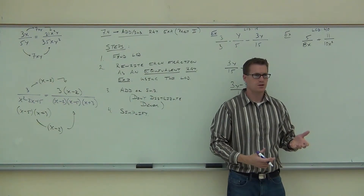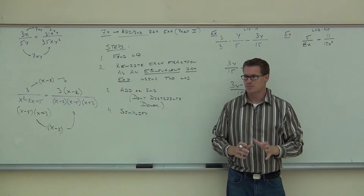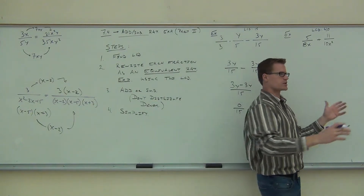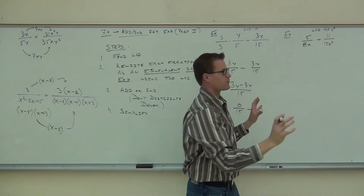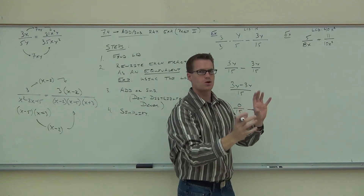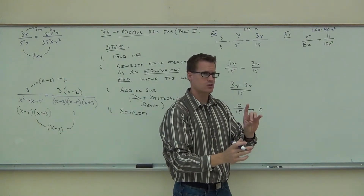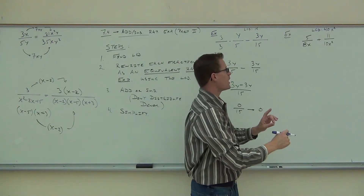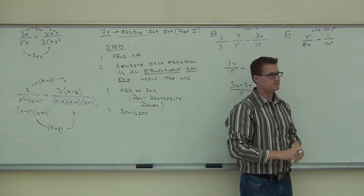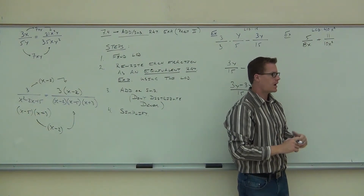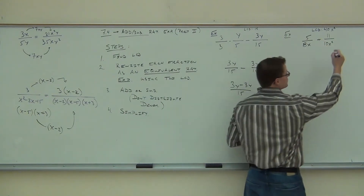We don't want to make fractions bigger than we have to. So the 10 and 8 give us 40, and the x and x squared — we take the largest power of each different factor. There's only one factor, x, so we take x squared. That right there is our LCD: 40x squared. Now the question is: how do I get from these denominators to my LCD? That's where the multiplication takes place.